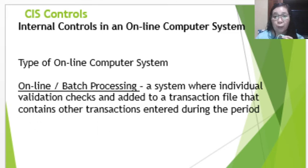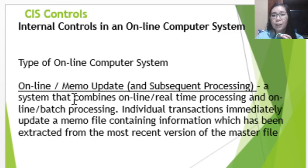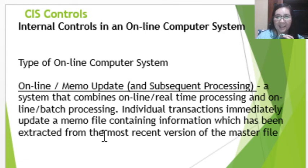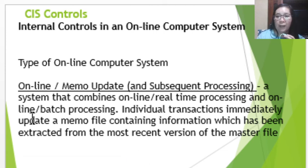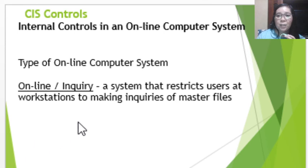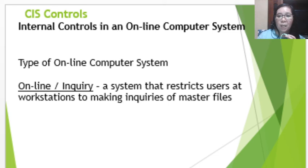Online memo update, or subsequent processing, is a system that combines online real-time processing and online batch processing. Individual transactions immediately update a memo file containing information extracted from the most recent version of the master file. Online inquiry is a system that restricts users at workstations to making inquiries to the master file, used for security purposes.